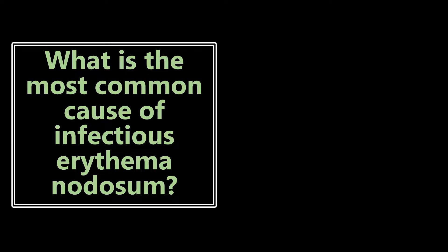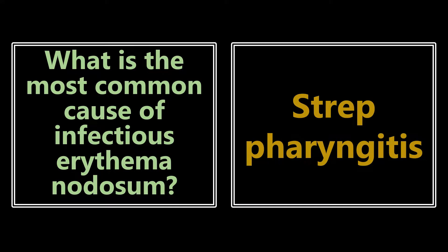What is the most common cause of infectious erythema nodosum? The most common cause is strep pharyngitis, which usually occurs about one to three weeks after the onset of sore throat. Patients may have completed their course of strep pharyngitis and then one to three weeks later develop erythema nodosum.